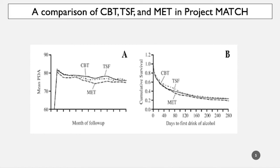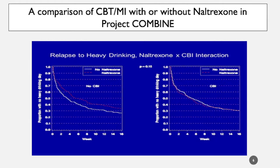Now I'm going to show another figure from Project COMBINE. This is in the context of both pharmacological and behavioral treatments — a comparison of a combined cognitive behavioral and motivational intervention with or without naltrexone. Looking at the arm of the study with CBI plus placebo versus CBI plus naltrexone, the lines are right on top of each other. So these different treatments are performing similarly well.